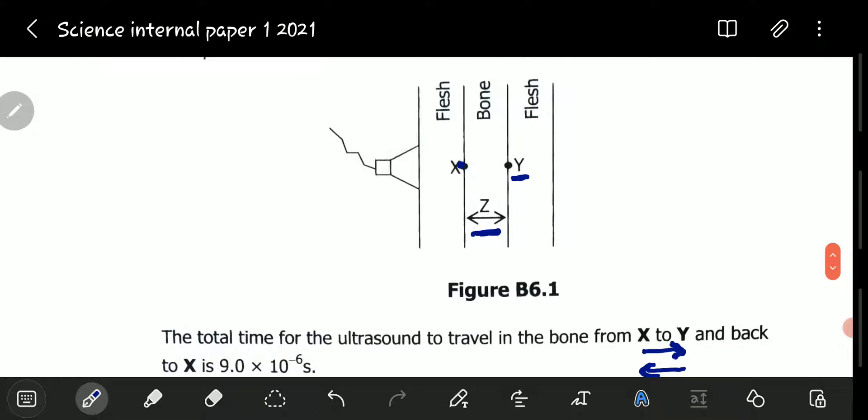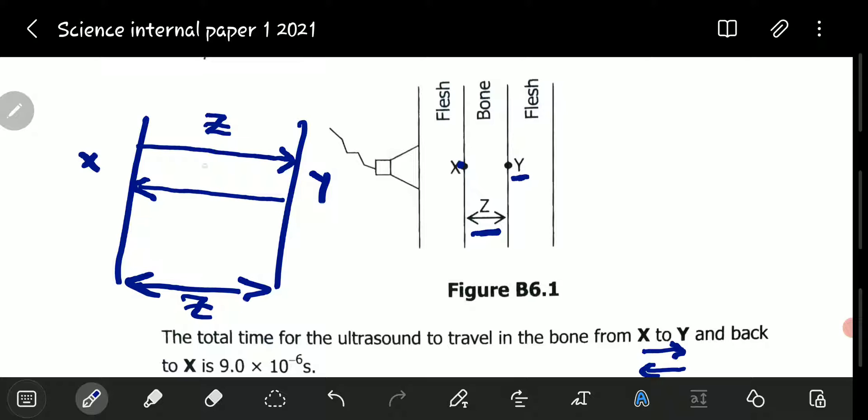They're saying that Z is the thickness. So, if this is Z, our thickness, then sound will first travel from X. This is X, this is Y. Sound will first travel from X and cover a distance equal to Z. Then, sound will move from Y and come back to X, covering another distance Z.